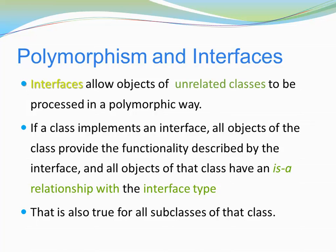Interfaces allow objects of unrelated classes to be processed in a polymorphic way. If a class implements an interface, all objects of that class provide the functionality described by the interface, and all objects of that class have an is-a relationship with the interface type. That is also true for all subclasses of the class, because interface methods are public — so the moment you have a subclass, it will inherit the public interface methods.